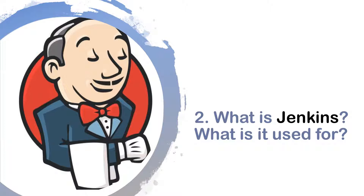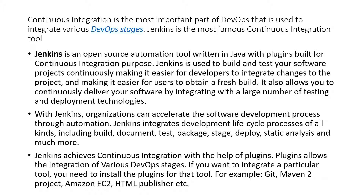The second topic is: what is Jenkins and what is it used for? Continuous integration is the most important part of DevOps, and Jenkins is the most famous continuous integration tool. Jenkins is an open source automation tool written in Java with plugins built for continuous integration. Jenkins is used to build and test your software project continuously, making it easier for developers to integrate changes and for users to obtain a fresh build. It also allows you to continuously deliver software by integrating with a large number of testing and deployment technologies. Jenkins integrates development lifecycle processes including builds, document test, package, stage, deploy, static analysis, and much more.